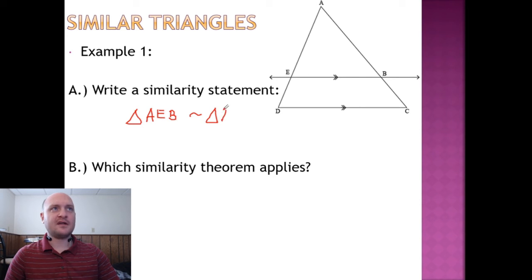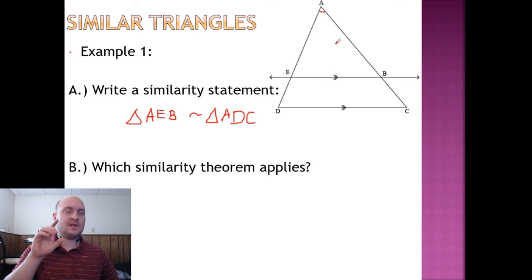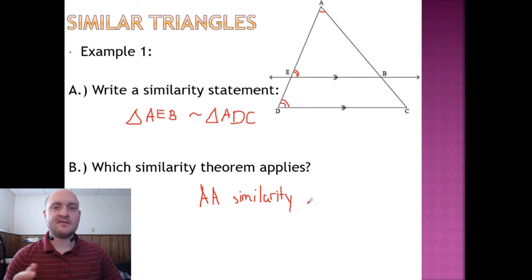The question below it asks, which similarity statement, or which similarity theorem applies? Well, in this case, I would like to say that I have maybe SAS, because there's a shared angle. But there's a problem. I don't have any sides. I don't know the side lengths here at all. So how did I know that these two triangles were similar? It's some of these parallel lines with the corresponding angles. For example, angle E is congruent to angle D. So if I was only basing this similarity on the angles being congruent, that is the angle angle or the AA similarity theorem.